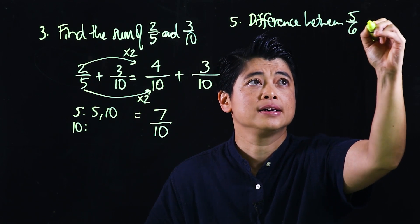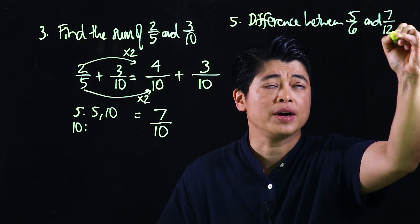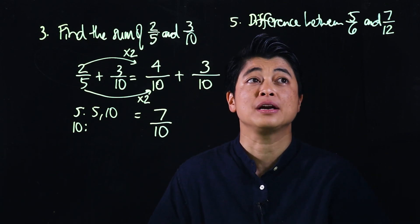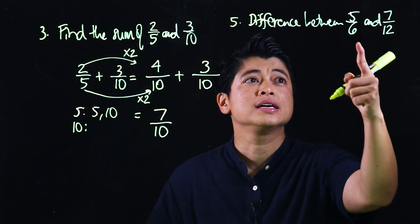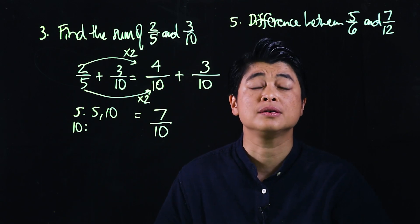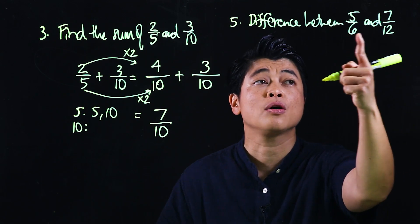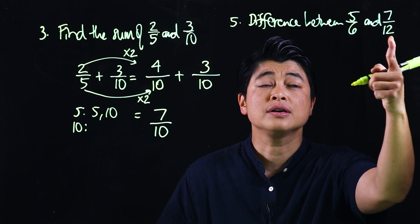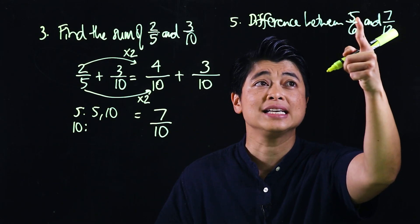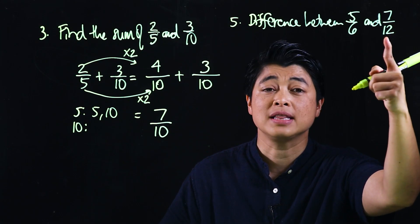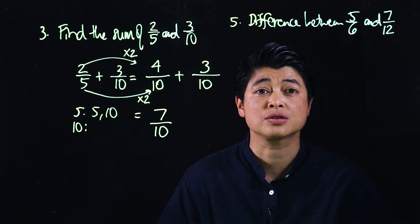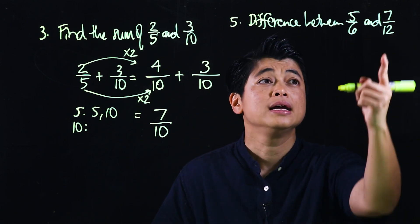It says difference between five-sixths and seven-twelfths, so we have to figure out first which one is bigger. If we multiply across, that might be difficult for the kids. Another way is to find the common denominator, which is 12. This will be 10, which means this is the bigger fraction.